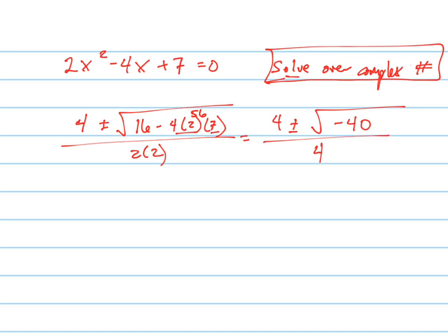So they want us to simplify this and write it in terms of i. They want us to write it like this. So in order to do that, we're going to have to simplify this right here. So let's do that on the side. The square root of negative 40.